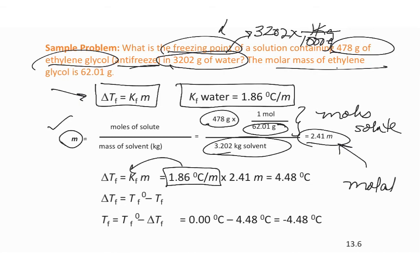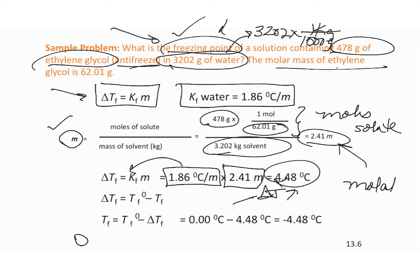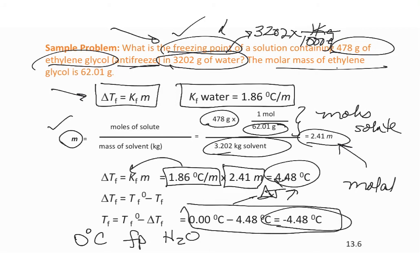Now plug into the equation to find the change in freezing point: the given constant times 2.41 molal gives a difference in temperature of 4.48 degrees. Be very careful — you have only calculated the difference in temperature, not the new freezing point. The question asks for the new freezing point. The normal freezing point of water is zero degrees C. Since freezing point depression always lowers the freezing point, the new freezing point of the solution with water and ethylene glycol is minus 4.48 degrees.